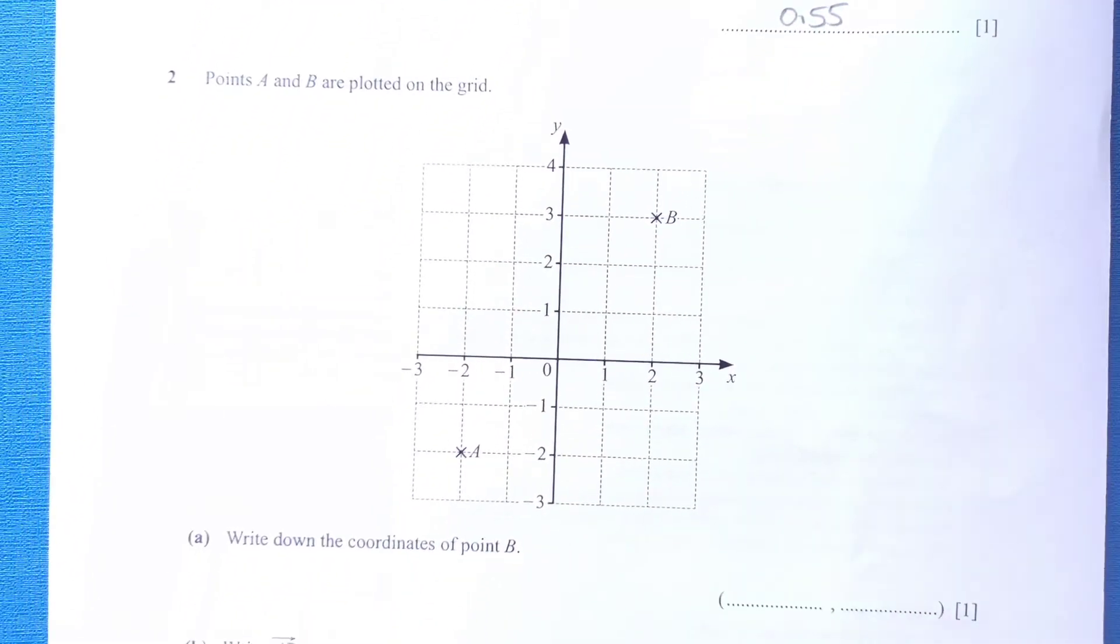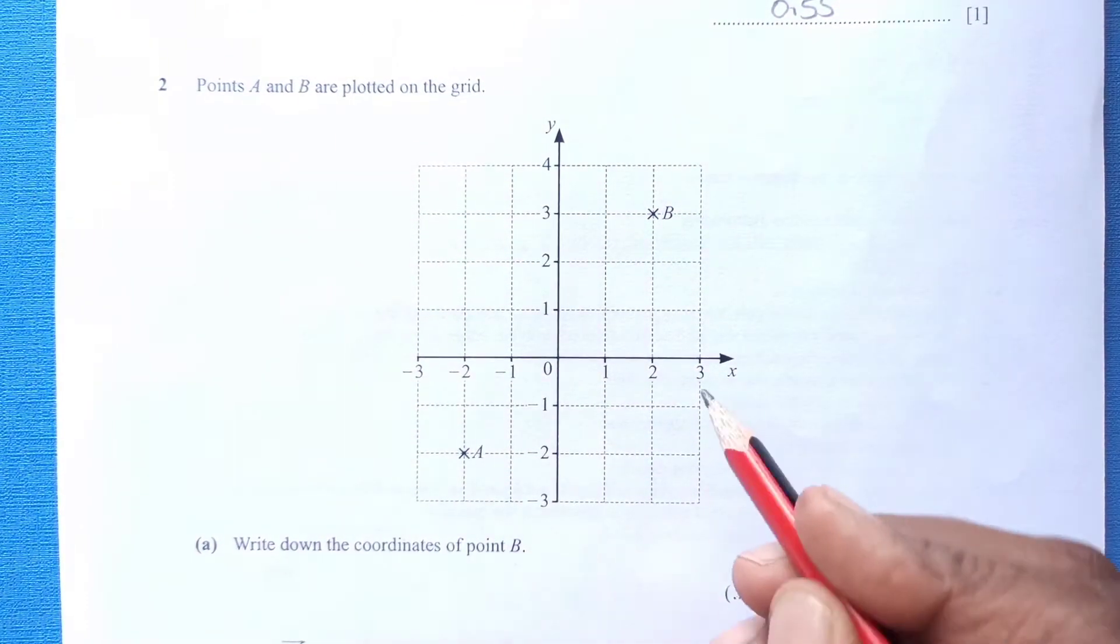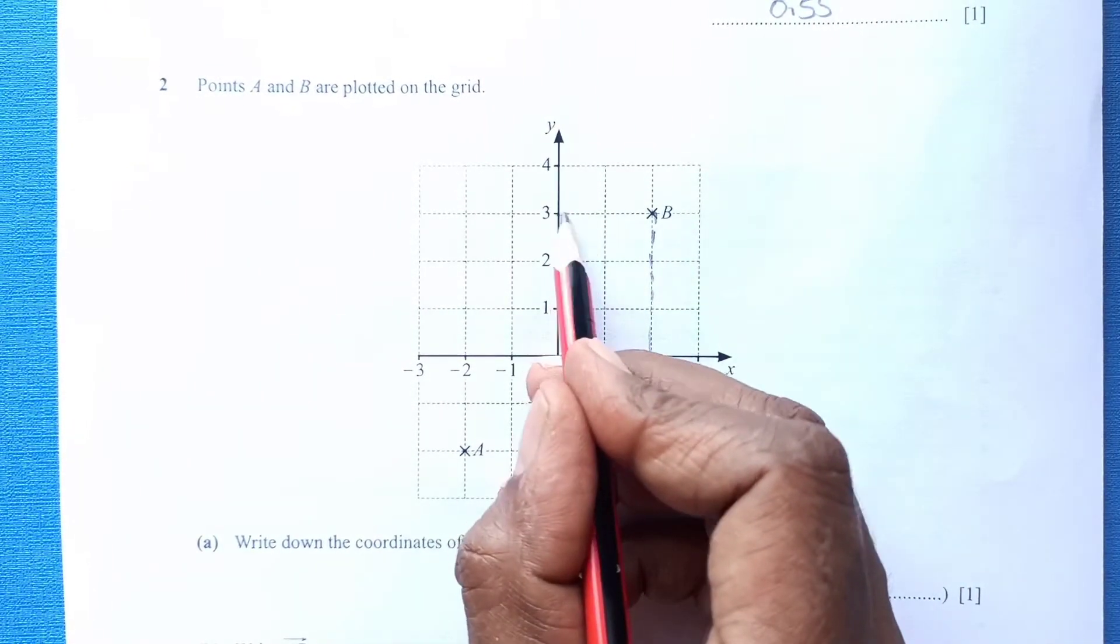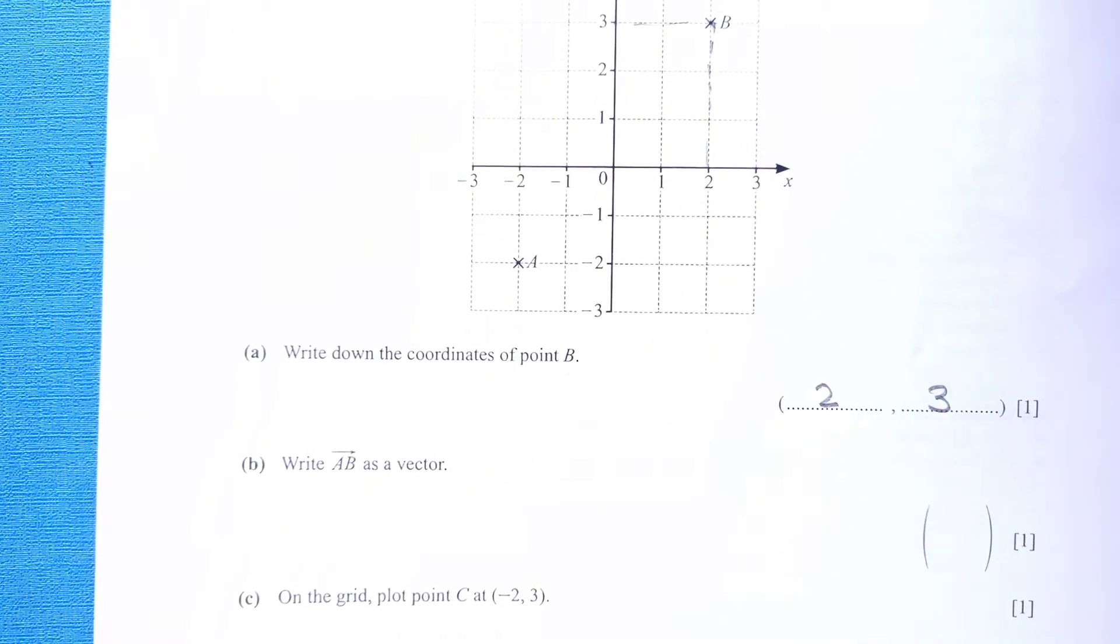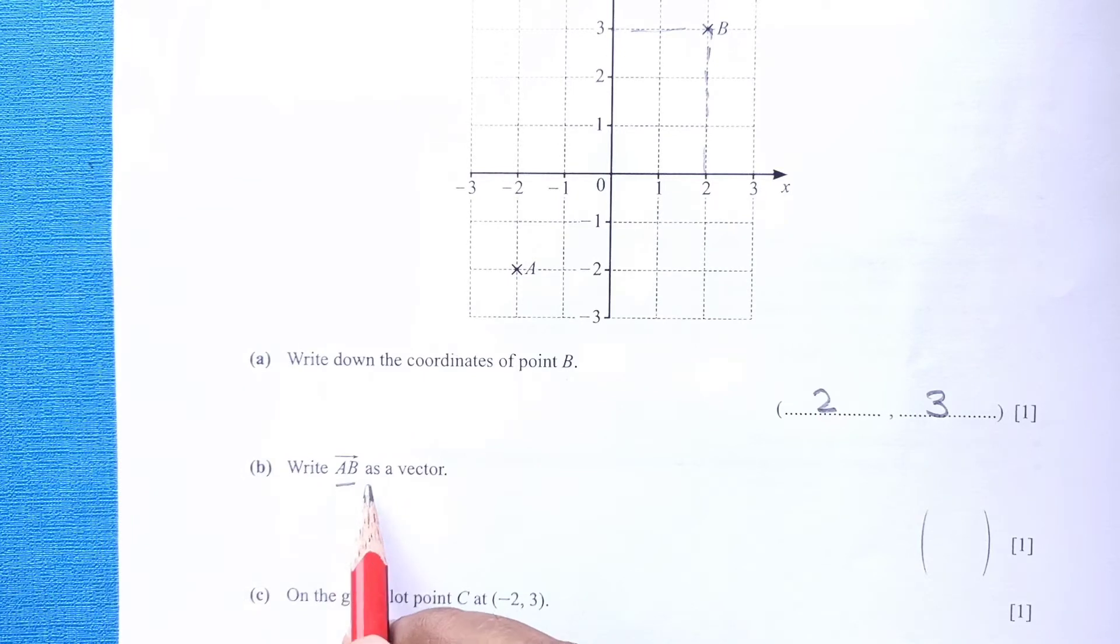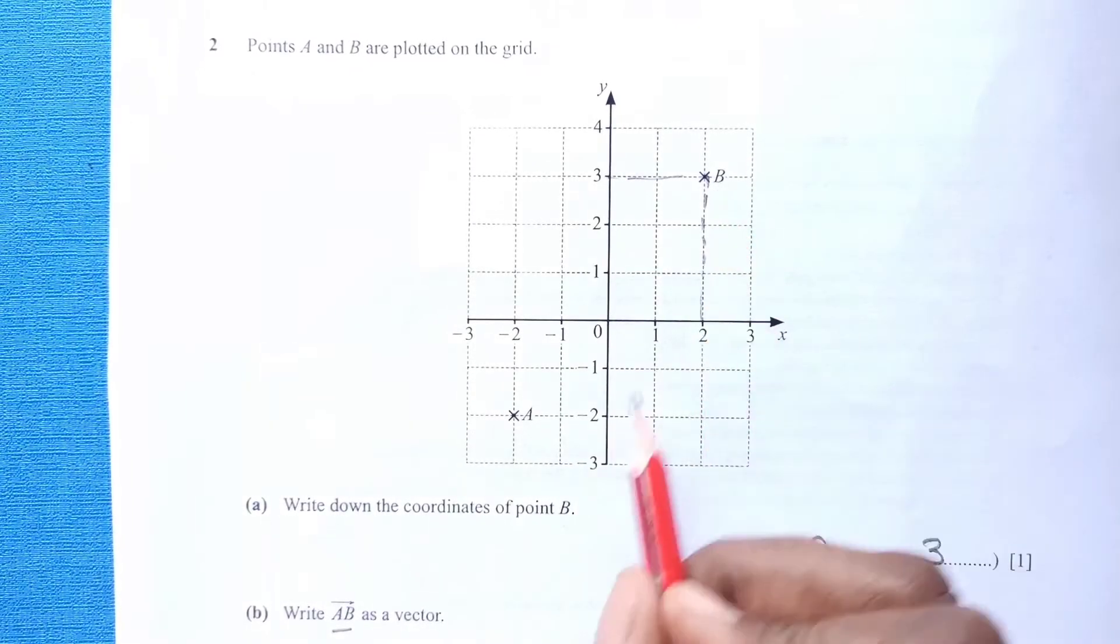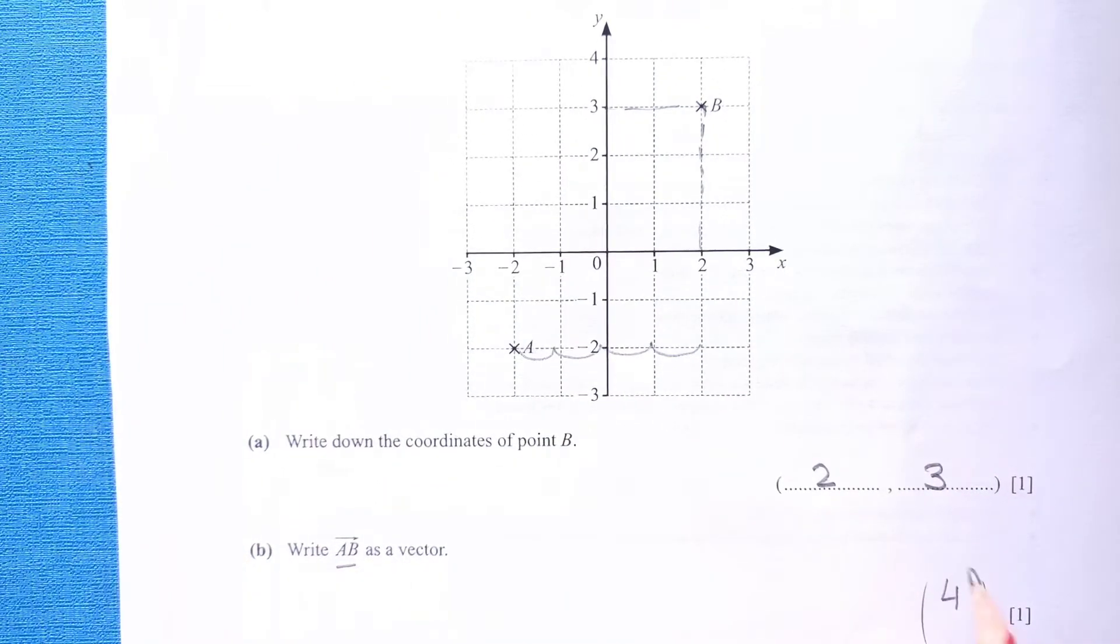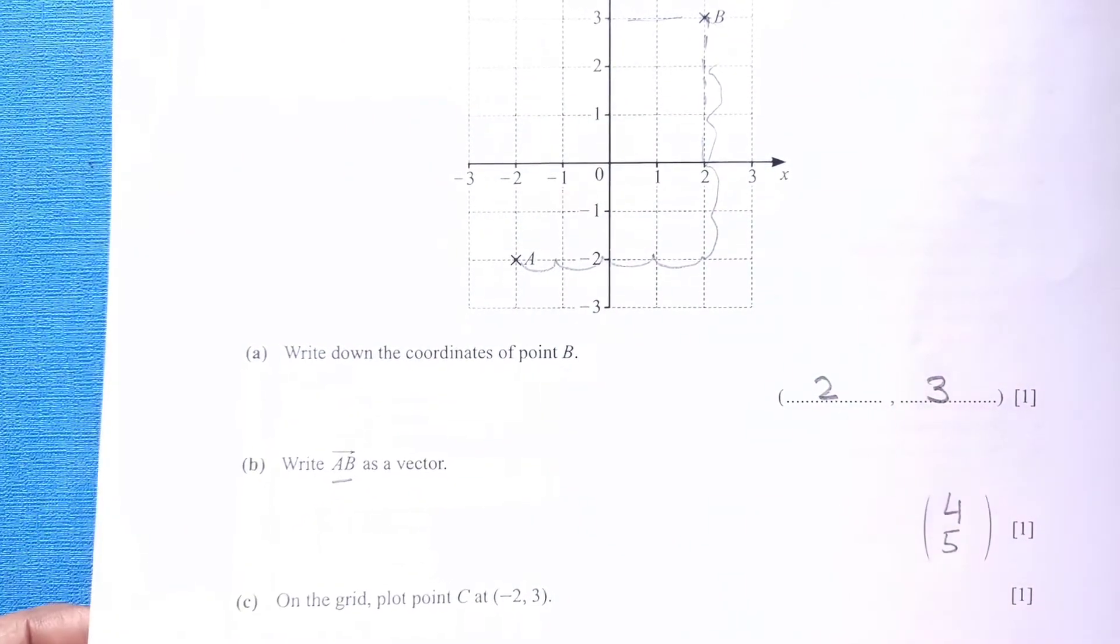Second question: Points A and B are plotted on the grid. You can see the points on the grid. Write down the coordinates of point B. Point B is here. We will go down to see the coordinate of X, it is 2. Going left, coordinate is 3. Now, write AB as a vector. That means how much distance, how many squares are moved from A to B. It is 1, 2, 3, 4. So it will be 4, and 1, 2, 3, 4, 5 up. Both are positive because we are moving right and up.